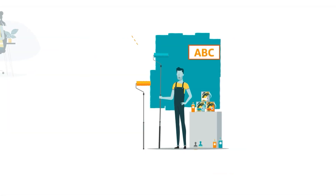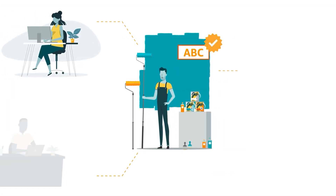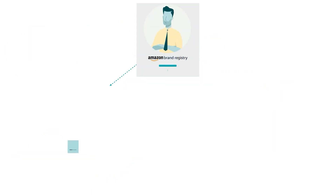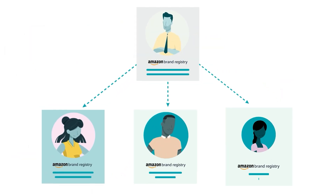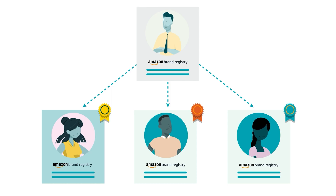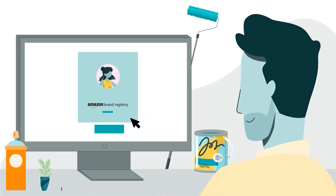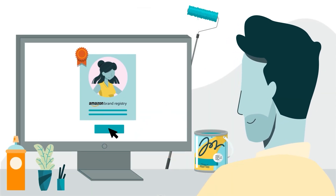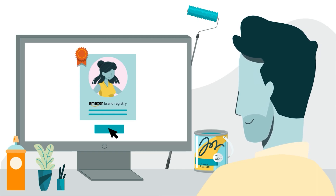If they want help protecting or managing their brand, they can also affiliate additional Brand Registry user accounts, assigning one or more roles to define access. Let's review the process for affiliating an additional Brand Registry account and assigning roles.